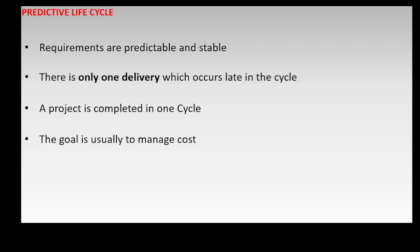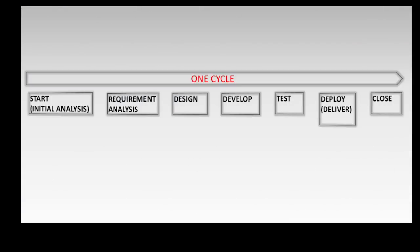The goal is usually to manage costs. In this diagram, between the start and the close of the project, there is only one single delivery, which occurs at the deployment phase. There is only one cycle, and the phases within it occur in sequence.